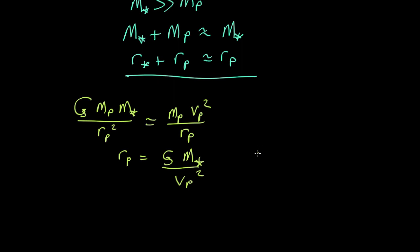But we do know that v planet equals 2 pi r planet over the period. That's just from working out how long it takes to go around a circle.